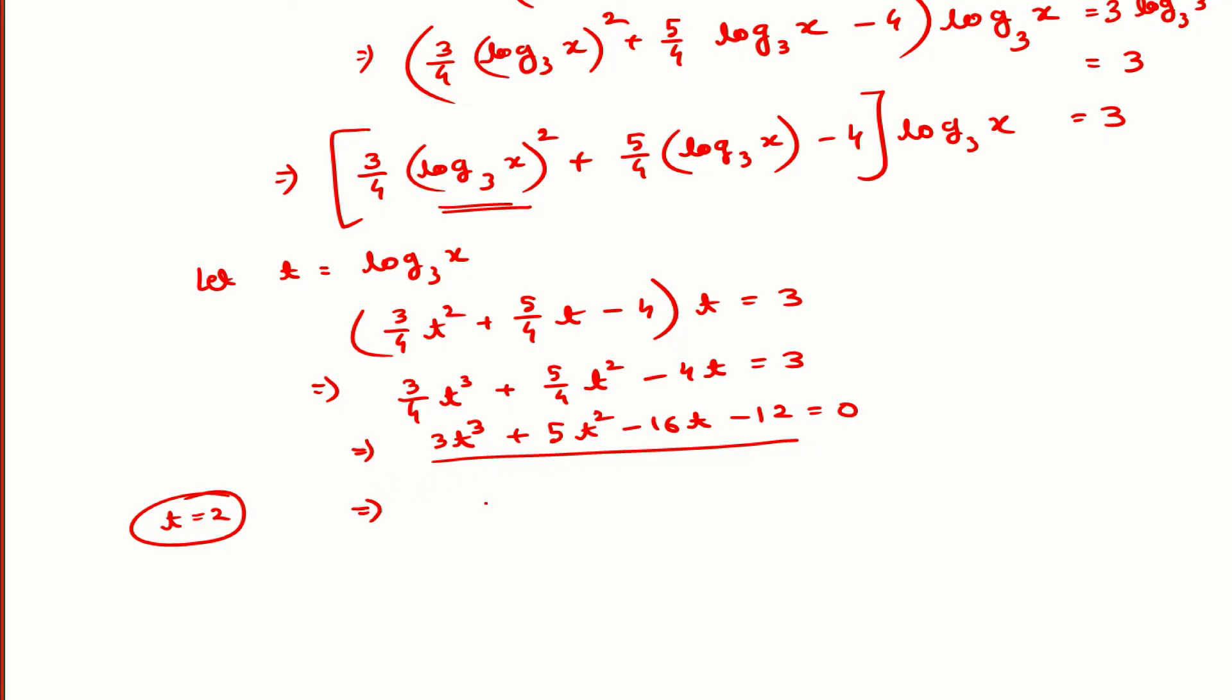t minus 2 will be a factor of it. If we take t minus 2 out, we will get the other factor to be 3t squared plus 11t plus 6 equal to 0. If you factorize this quadratic, you will get (t plus 3) times (3t plus 2).